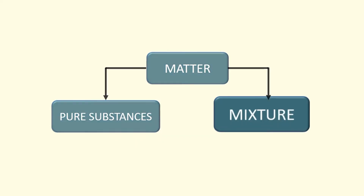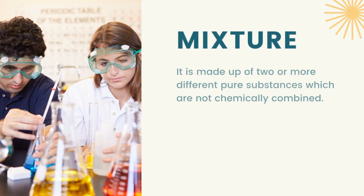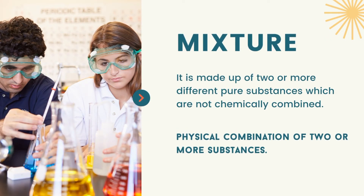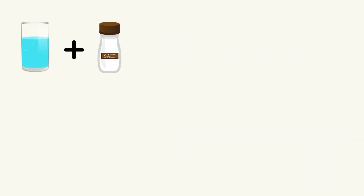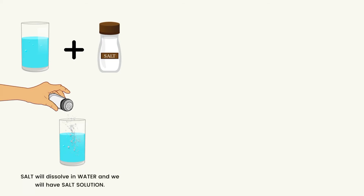Now let us proceed with the mixture. A mixture is made up of two or more different pure substances which are not chemically combined. Therefore, a mixture is the physical combination of two or more pure substances, and because of that, substances in the mixture keep all their physical and chemical properties. I have here water and salt, which are pure substances. If we mix water and salt, the salt will dissolve in water and we will have salt water, or a salt solution.